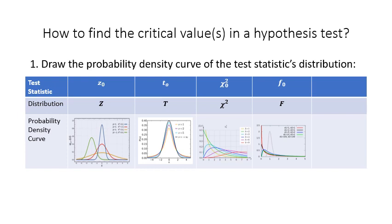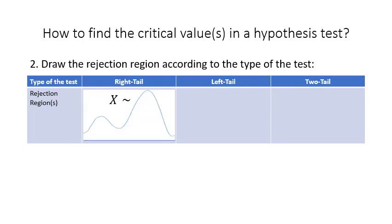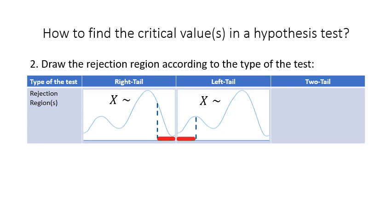In this video I'm going to use a generic distribution x with a generic test statistic lowercase x sub zero and a generic probability density curve. After sketching the probability density curve, you draw the rejection region according to the type of the test. In a right-tail test the rejection region is in the right tail; in a left-tail test it is in the left tail; and in a two-tail test the rejection region is made of both tails.